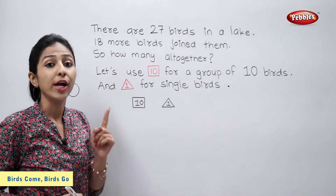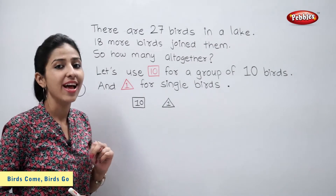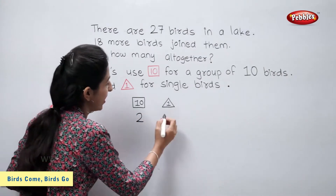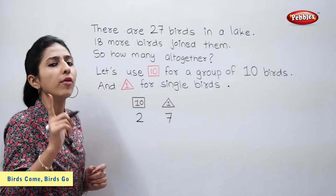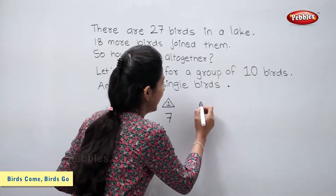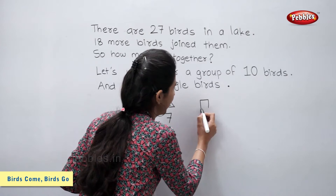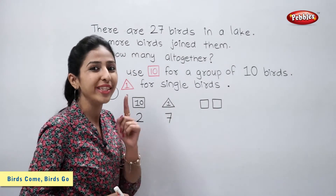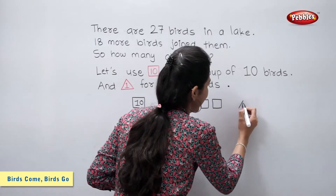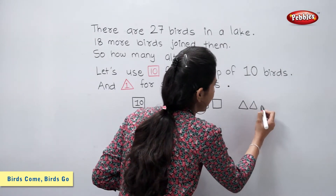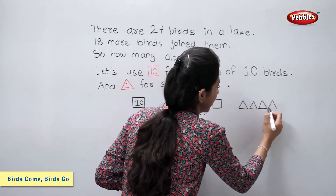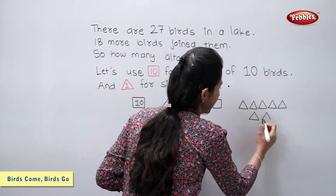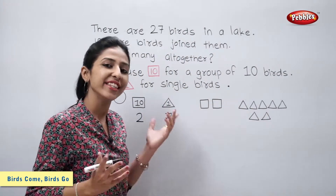Now let's write 27. 27 means two tens and seven ones. We can also write 27 as two squares — that means two tens — and seven triangles, which means seven ones.